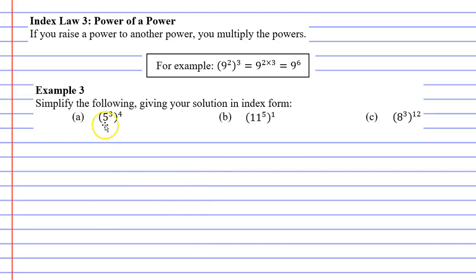Let's look at some examples now. In fact, without even realizing, I did question A. 5 to the power of 3 times 4 gives us 5 to the power of 12.